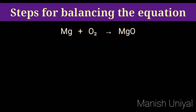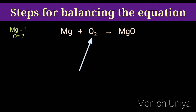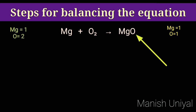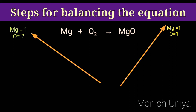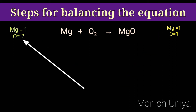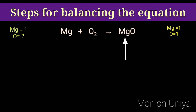Now we will check the number of atoms in the reactant side: magnesium is 1, oxygen is 2. Then we check the number of atoms in the product: magnesium is 1, oxygen is 1. We can see magnesium on both sides is 1, but oxygen in the reactant side is 2 and on the product side is 1. So we will multiply MgO by 2 — that is, we will write 2 as a coefficient in front of MgO.